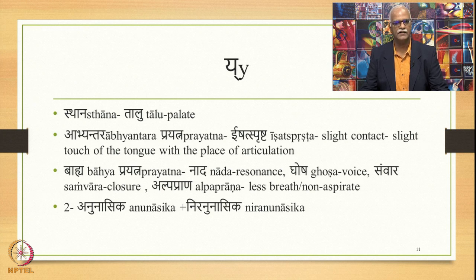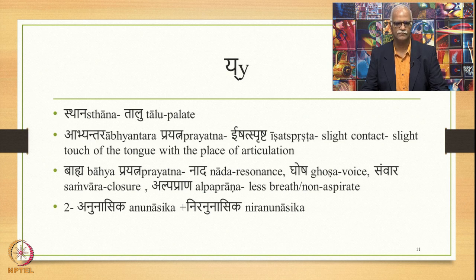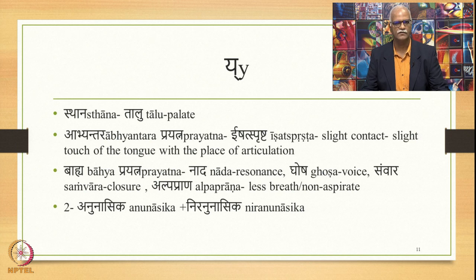This consonant also possesses the property of Alpaprana — less breath, also called non-aspirate. The Paninian grammatical tradition notes that there are two varieties of Yeh: Anunasika and Niranunasika. That is the reason why these are called semivowels as well.